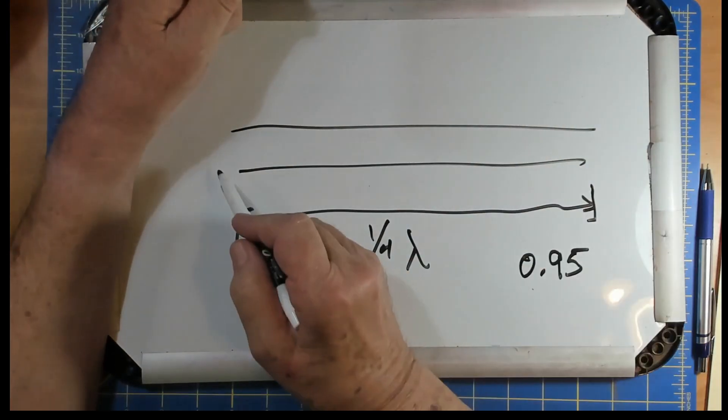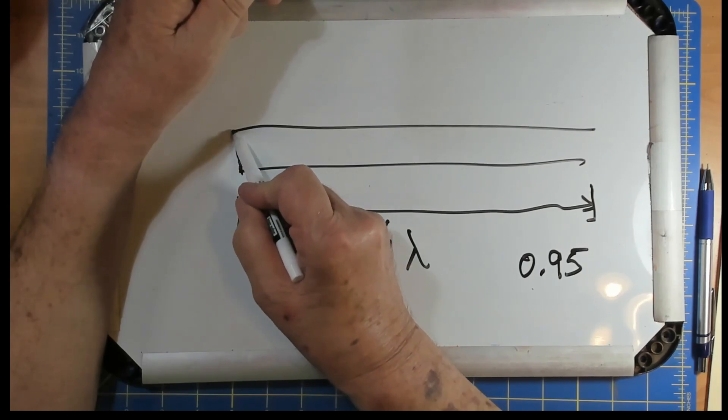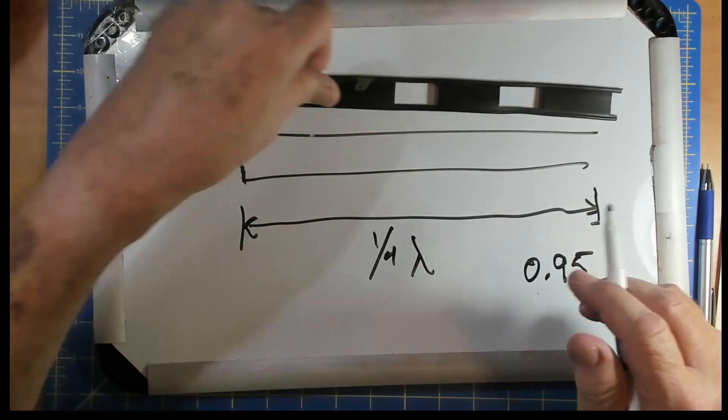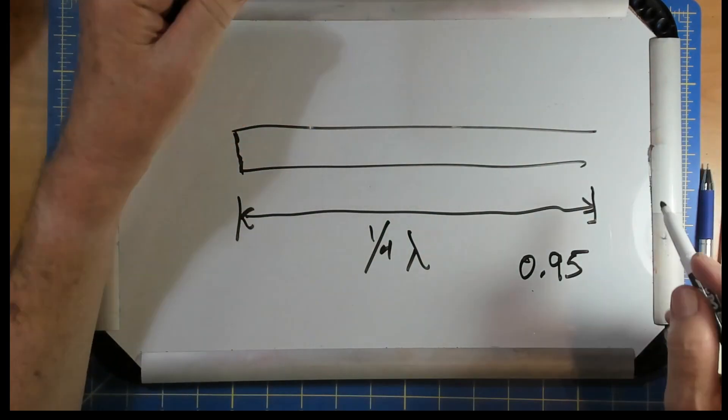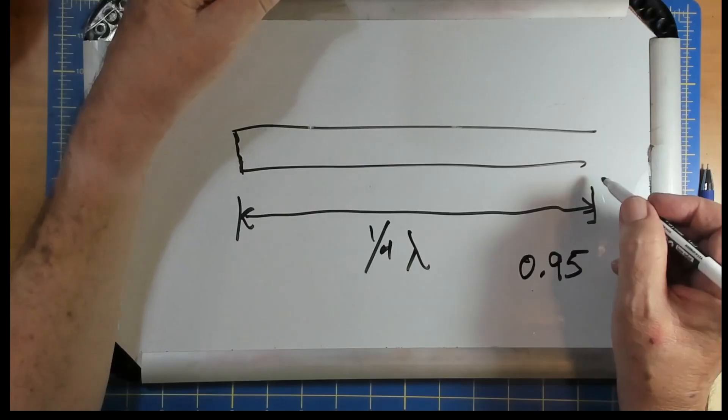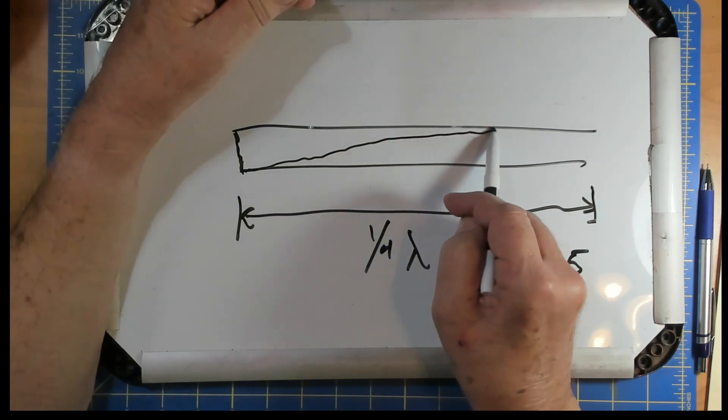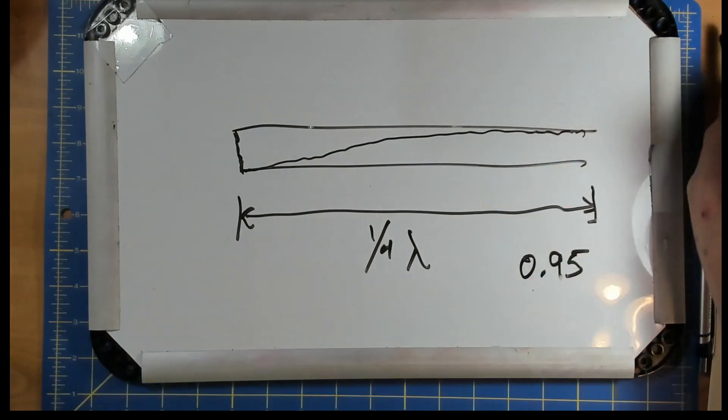Now let's watch what happens if we short this end. We're going to short it. So this end is open. That's the same as taking this right here, shorting it across, leaving this end open. And again, it's a quarter wavelength long. Now the voltage at this point must be zero, right, because it's shorted. So here is a quarter of a sine wave going up to here.